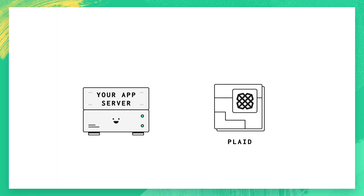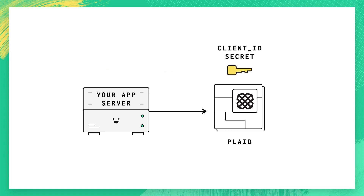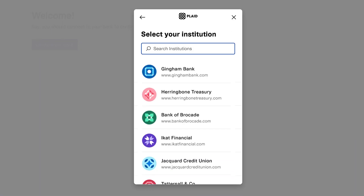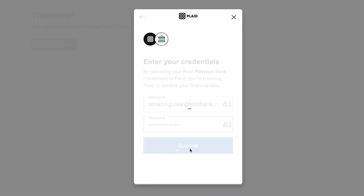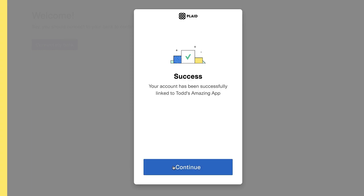To talk to the Plaid API you'll be making calls from your application server. Nearly every call you make will include your client ID and secret so Plaid knows it's really you. You can get this information from the Plaid dashboard, and the Plaid SDKs can simplify this process by including this data with every call you make. On the client, your user will do the work of signing into their bank, selecting what accounts to share, and giving Plaid permission to access their data — all through a UI widget called Link that handles all the heavy lifting for you.